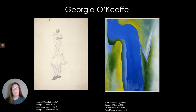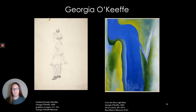Georgia O'Keeffe was an American artist who was born in 1887 and lived until 1986. She passed away and she was 98 and a half, so she had a very long life, and she created art throughout her entire life. What you see here is a drawing she created in 1904 at the age of 16, and it's of her sister Claudia. The painting is called From the River Light Blue, and she created it when she was 76 years old.